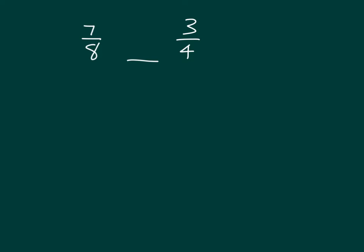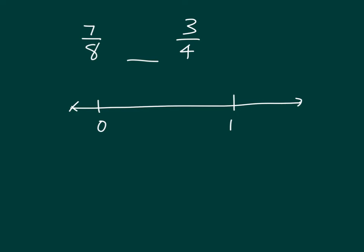Let's compare these two fractions. We have seven-eighths and we have three-fourths. We have related denominators here, with the four and the eight. Let's use a number line to model each pair of fractions. We'll draw one number line to model this pair of fractions, in between the whole numbers zero and one. Let's start with the smaller denominator of fourths and separate this number line into fourths.